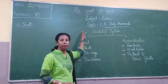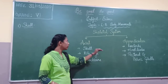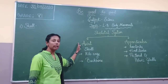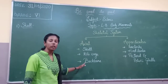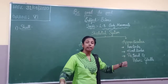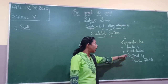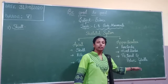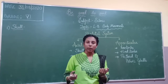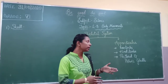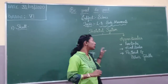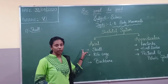The skeletal system is divided into two parts: the axial skeleton and the appendicular skeleton. The axial skeleton consists of the skull, ribcage, and backbone. The appendicular skeleton consists of the four limbs — our arms are the forelimbs and our legs are the hind limbs — along with the girdles, which are big bones that help join the appendicular skeleton to the axial skeleton.